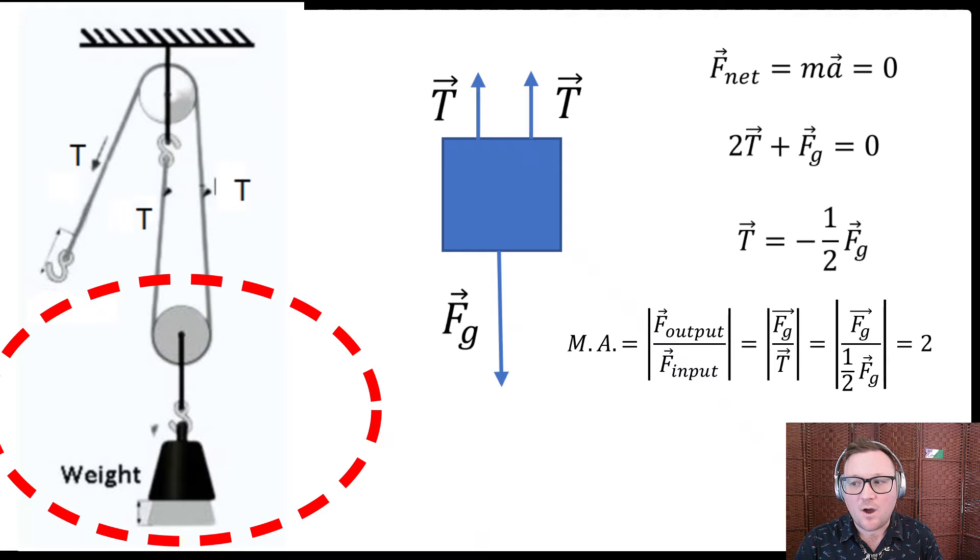We know that our tension force is the applied force, so we can call that the input force, and the weight at the bottom is the output force. So if we do a mechanical advantage calculation now, we can see that F output over F input is actually two. So this system has a mechanical advantage of two. We only need to pull half as much as we would need to pull to lift this object.